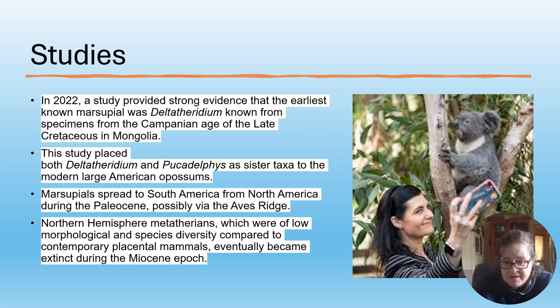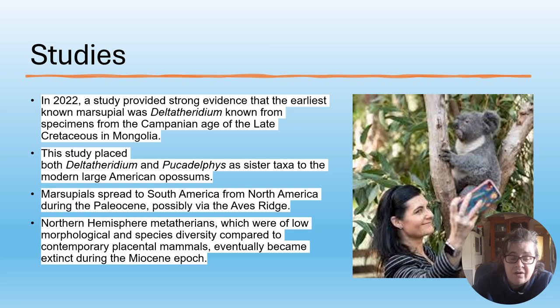A 2022 study provided strong evidence that the earliest known metatherian was Deltatheridium, known from specimens across the Campanian age of the late Cretaceous in Mongolia. The study placed both Deltatheridium and Pucadelphys as sister taxa to the modern large American opossums. Northern hemisphere metatherians, which were of low morphological and species diversity compared to contemporary placental mammals, eventually became extinct during the Miocene epoch.